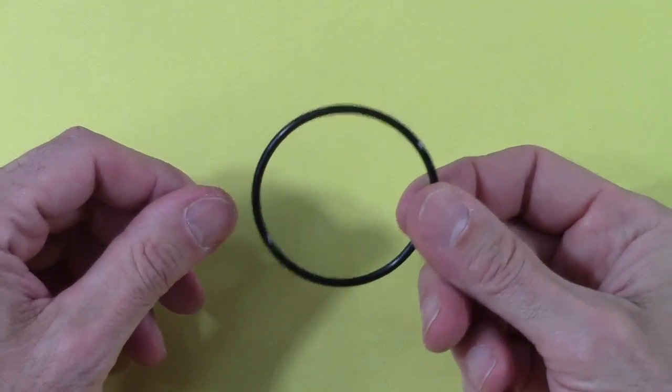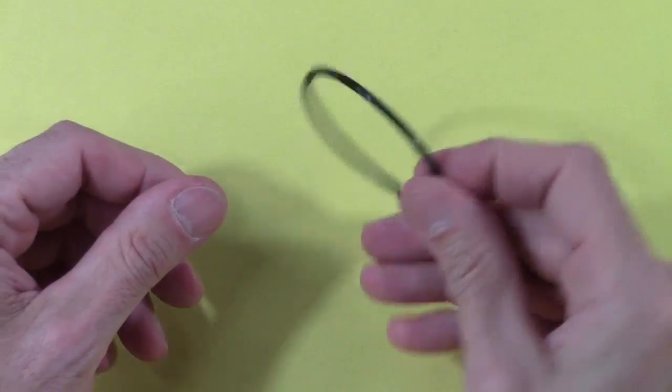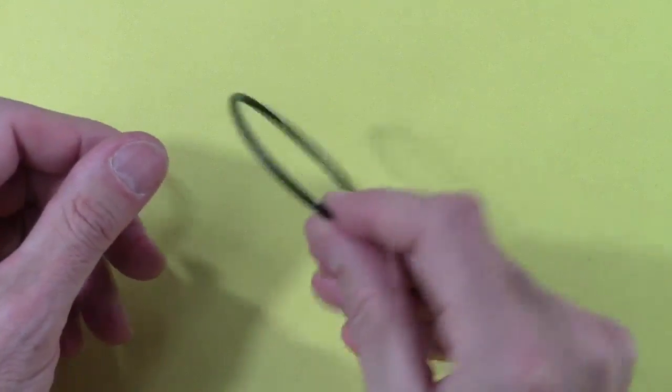So with no ends at any stage in the process, I'm challenging you to transform an ordinary rubber band into a knotted loop, say a trefoil.